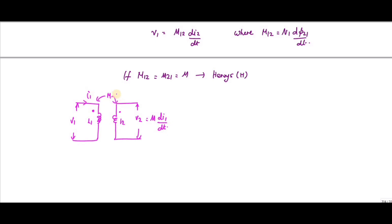Due to this current, you have mutual inductance. If both the dots are on the same side, you will get positive M. Suppose if the dots are on opposite sides, you will get minus M.